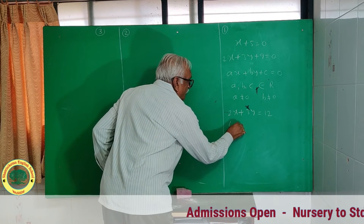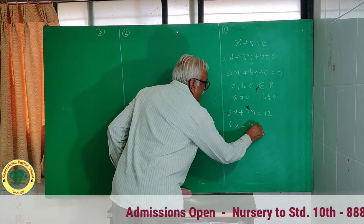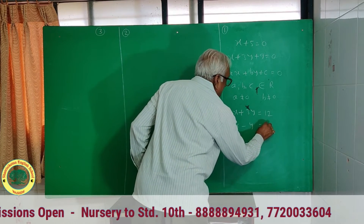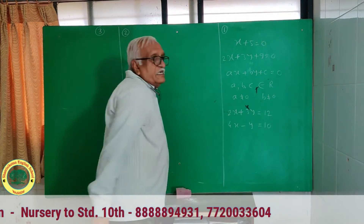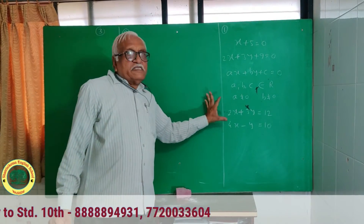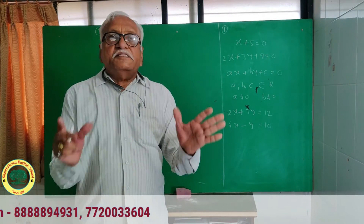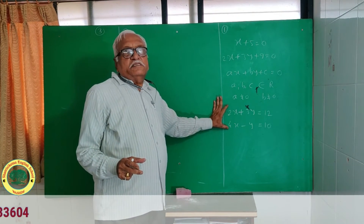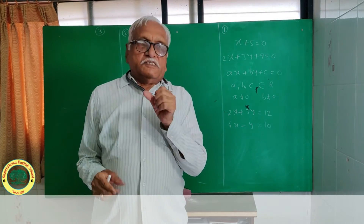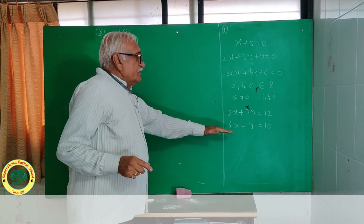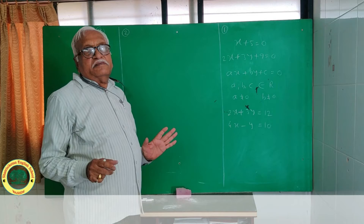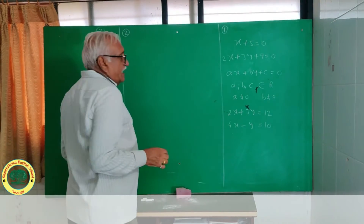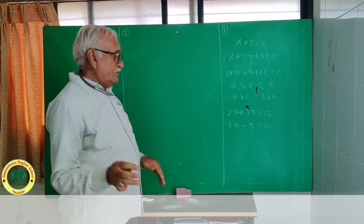For example, 2x plus 3y equal to 12 and 4x minus y equal to 10. These two equations together are called simultaneous equations. Before solving them, you should be able to identify whether given equations are simultaneous equations or not.